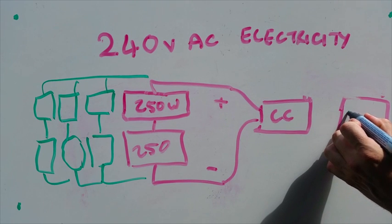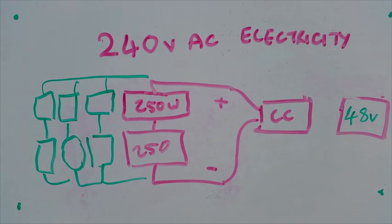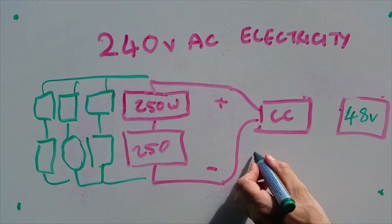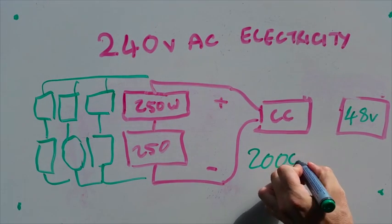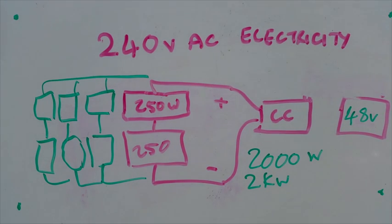This system of eight panels creates 2,000 watts or 2 kilowatts of power. I've been running this system very successfully. And we've added an air conditioner and we've added a second chest freezer. And I'm very happy with it. So that's awesome.